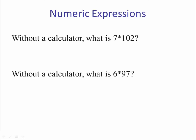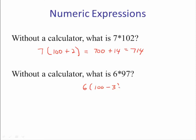Now an example involving numerical expressions. Imagine computing seven times 102 without a calculator. Using the distributive property, rewrite it as seven times the quantity 100 plus 2: seven times 100 is 700, plus seven times 2 is 14, giving 714. Similarly, six times 97 equals six times the quantity 100 minus 3, since 97 equals 100 minus 3. Distributing: six times 100 is 600, minus six times 3 is 18, giving 582.